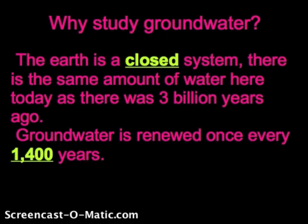So we're going to study groundwater. The reason is that the earth is a closed system, meaning there's the same amount of water here today as there was about three billion years ago. Some scientists theorize that groundwater is renewed once every 1,400 years — it flows through a cycle and is completely replenished approximately every 1,400 years. However, some groundwater has been in the ground for hundreds of thousands of years because there are no wells in those areas pulling the water out.